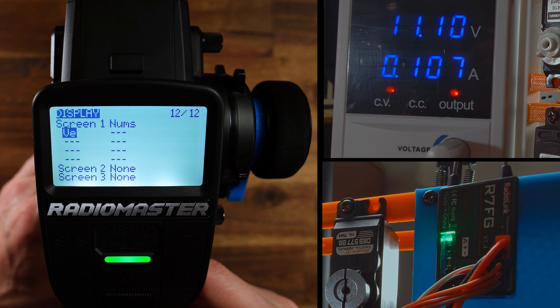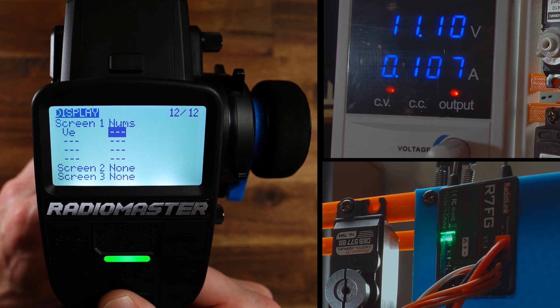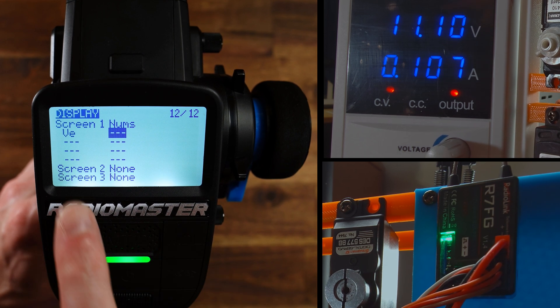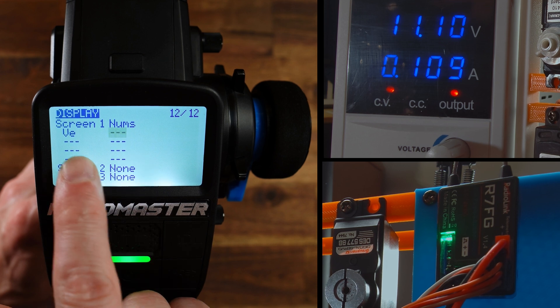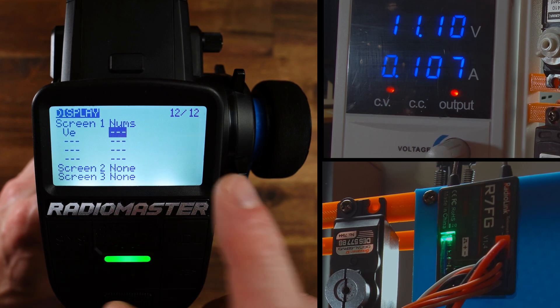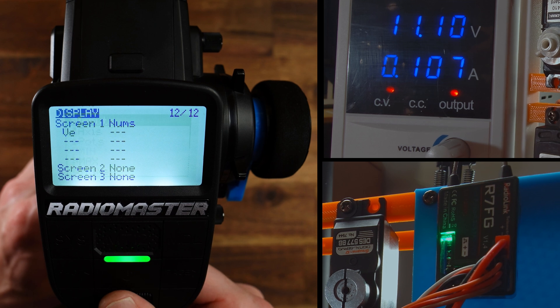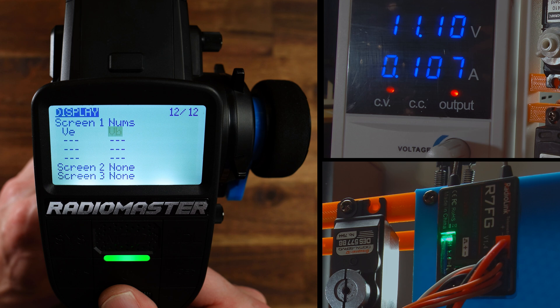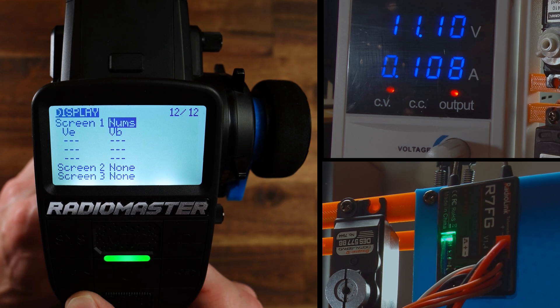Very well. And here in the second element, you have eight slots here, two columns with four rows each. And here again I go to telemetry and take VB, this is the battery voltage and that's it.